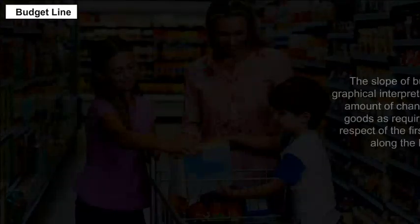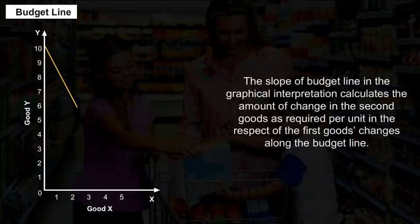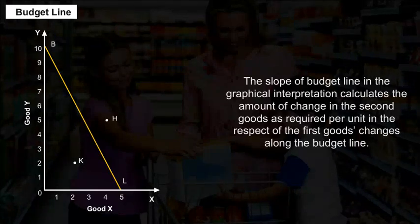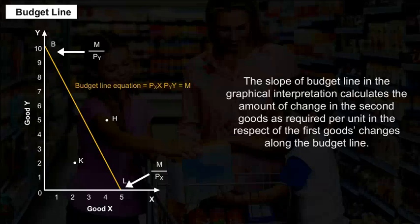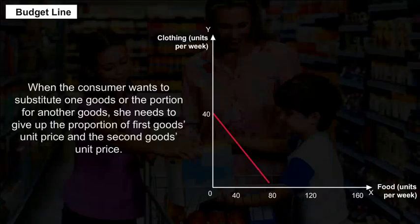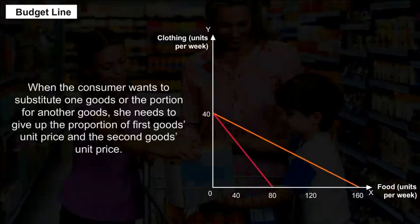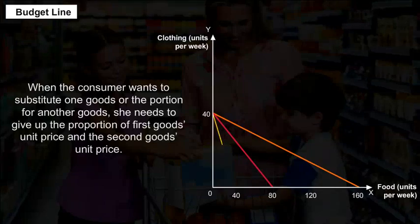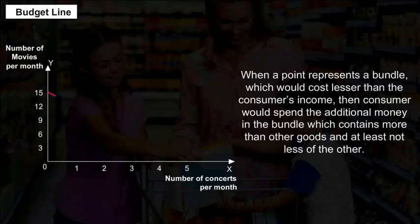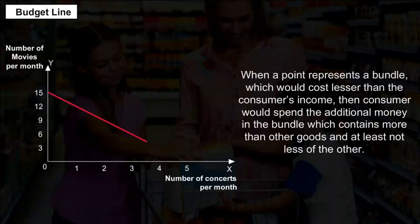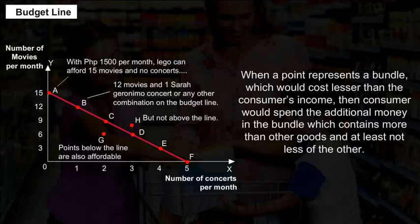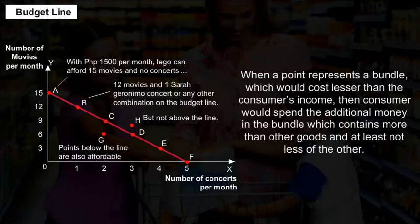The Consumer's Budget. Budget set: A budget set refers to all the consumption bundles that a consumer can buy given his money income and price of the goods. It is constrained by the budget line. The budget set is also known as a budget constraint, as it shows the limit up to which the consumer can buy a set of two goods with his given income. All those bundles the consumer can afford at prevailing market prices are included in the budget set.